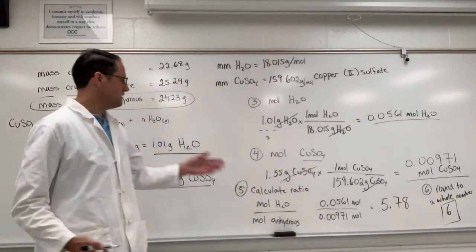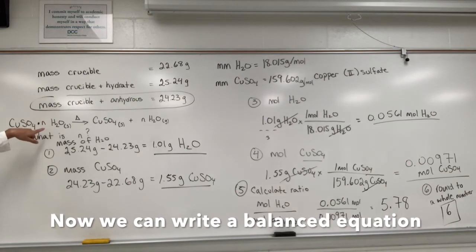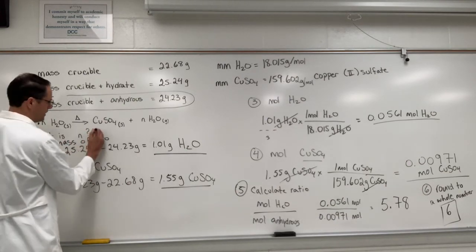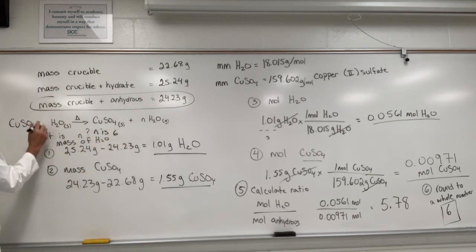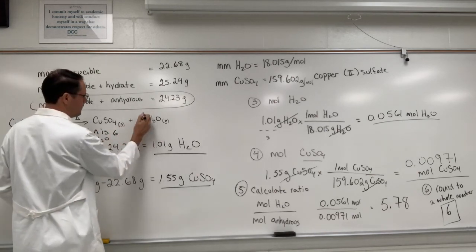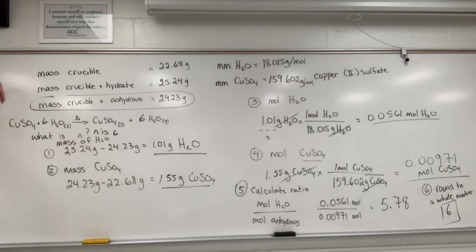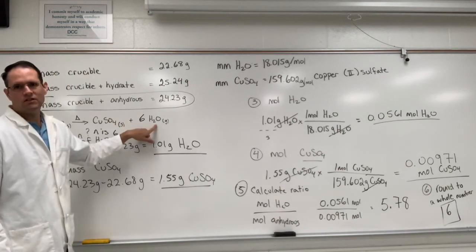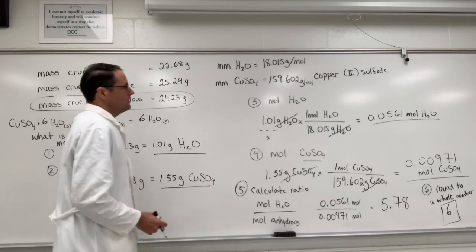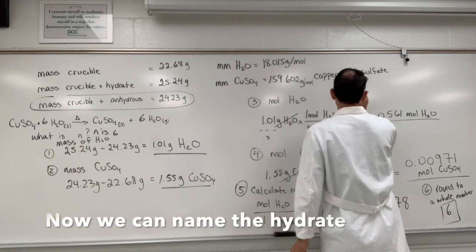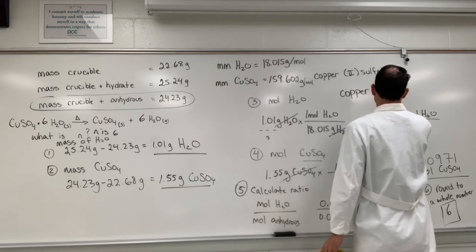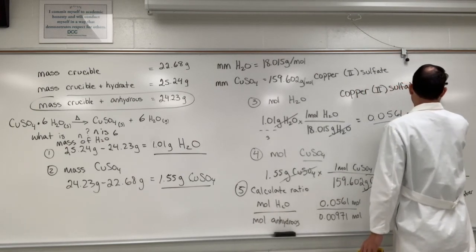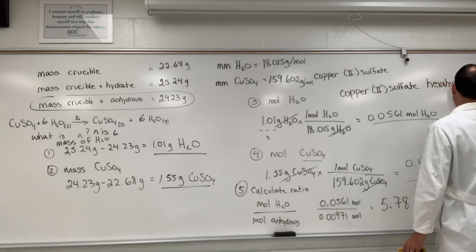So I can come back up to this balanced chemical equation now, and I can replace, I can write the answer to this question, n is 6. I can put a 6 right here, and I can put a 6 in front of here, and this equation right here reads copper sulfate hexahydrate thermally decomposes or yields copper 2 sulfate and six water molecules.